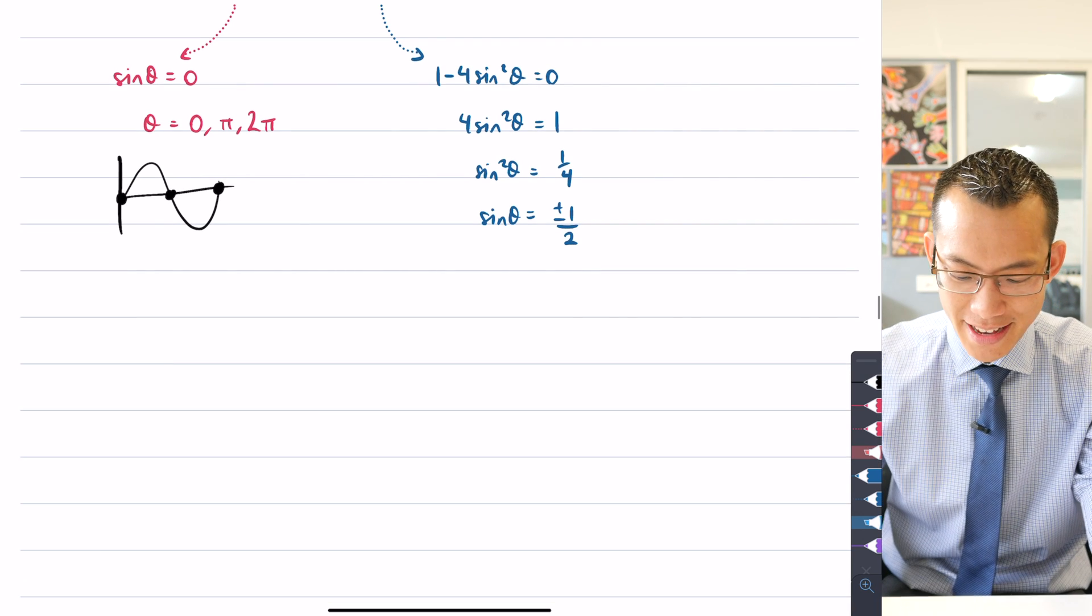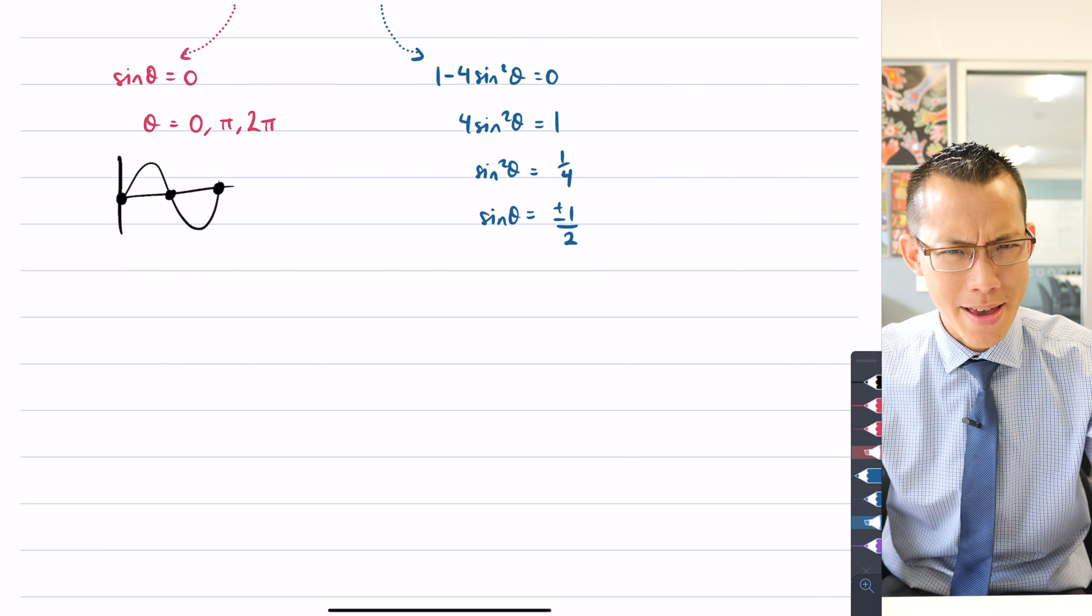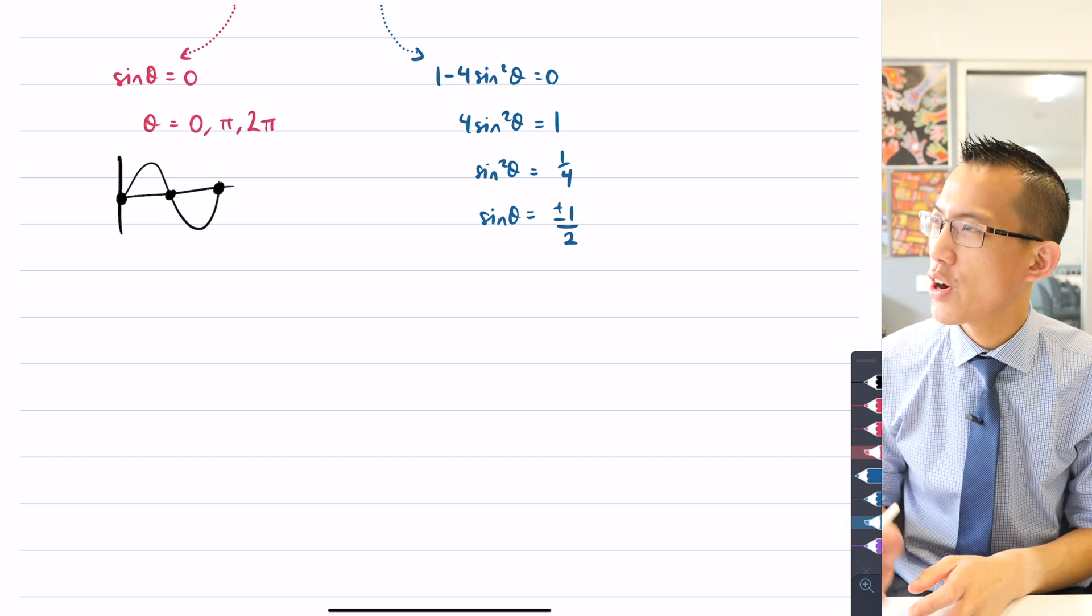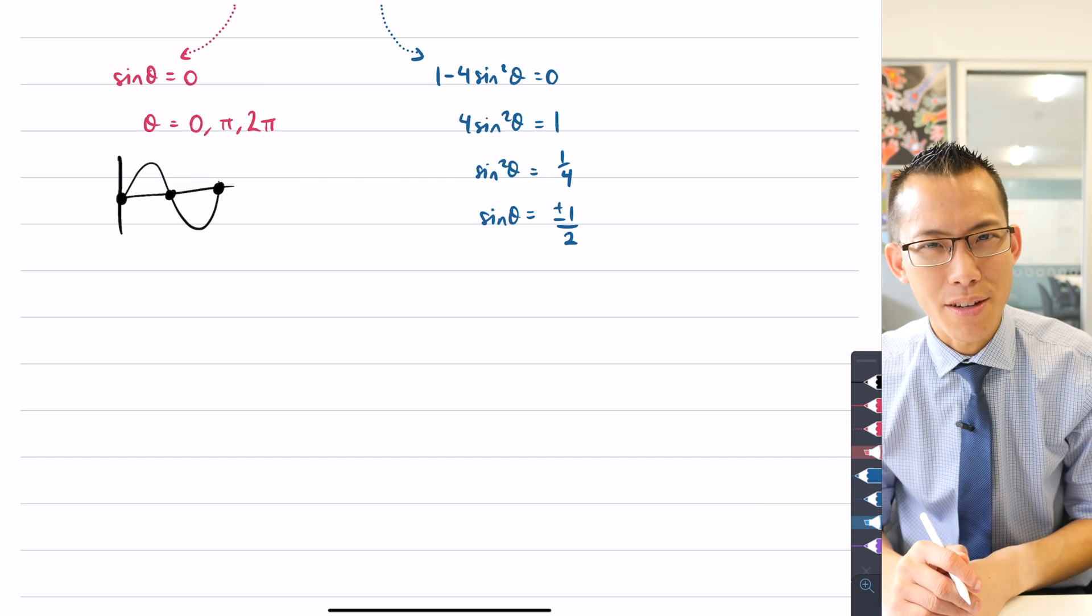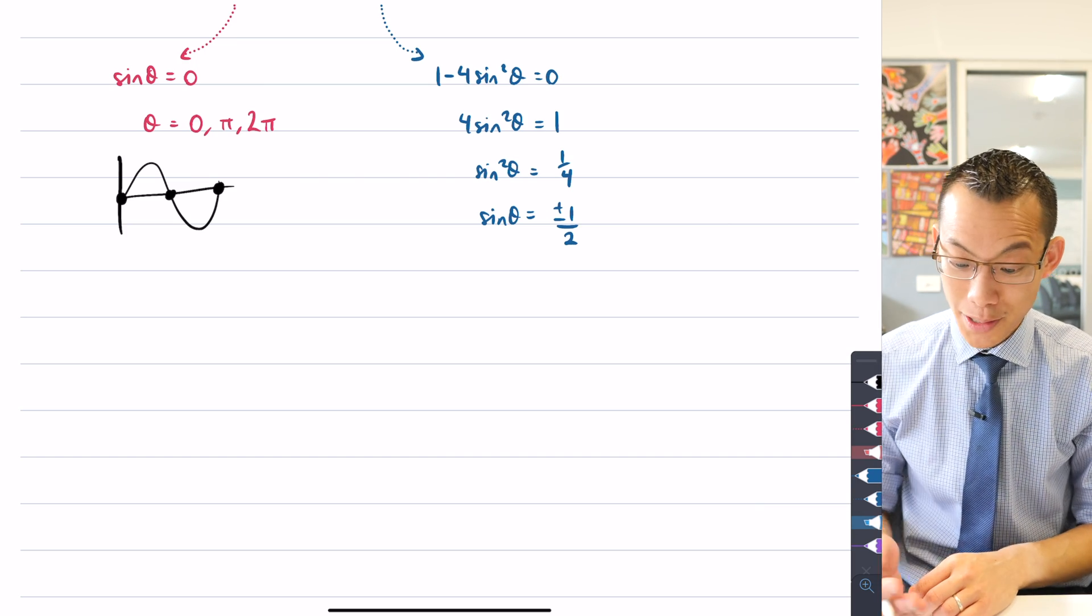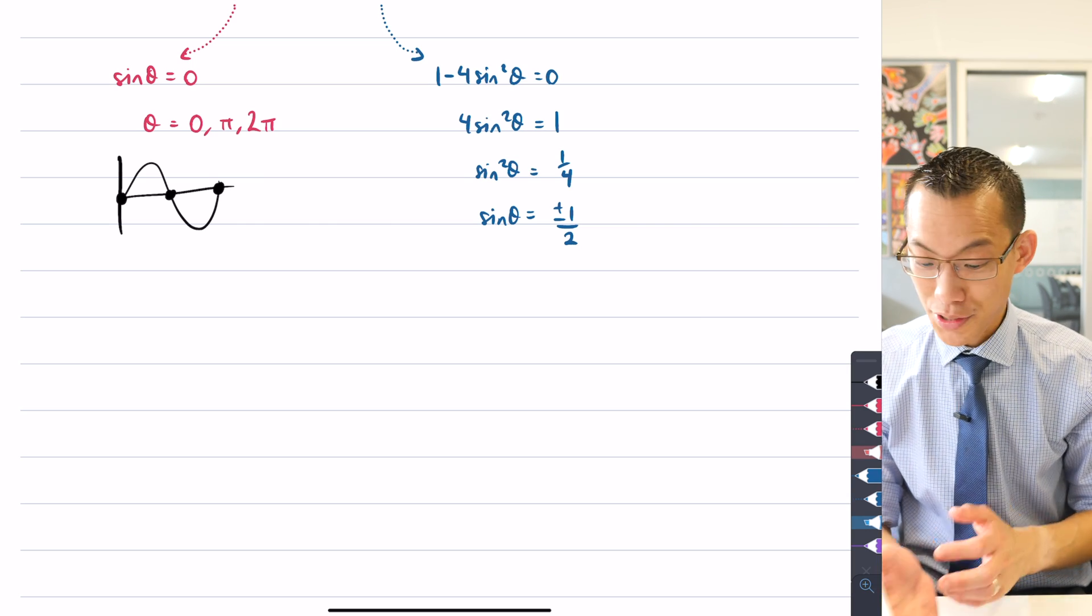So I'm getting plus or minus a half on the right-hand side here. Now that plus or minus is actually, even though it looks like it's messier, it's actually really easy because you know we usually think of trying to work out quadrants and that kind of thing. You're like, oh, sine is positive in quadrant 1 and 2 and sine is negative in quadrants 3 and 4. Well, because I've got plus or minus here, you just get all of the quadrants.